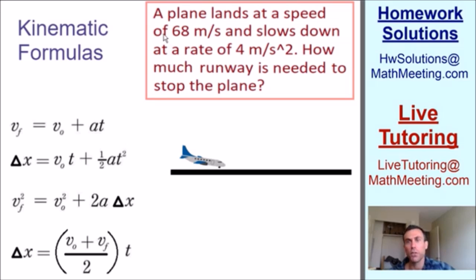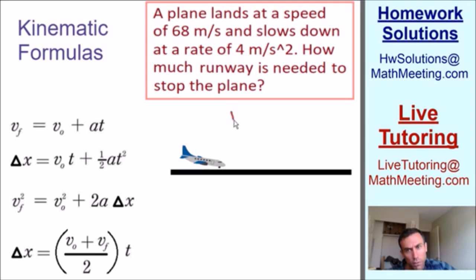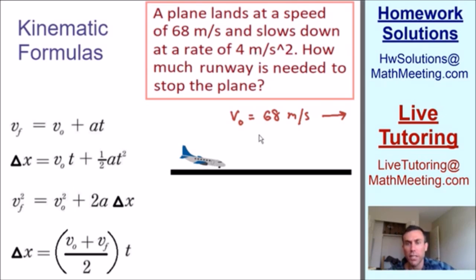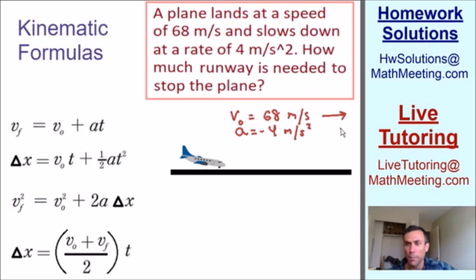So what has been given to us? The plane lands at a speed of 68 meters per second, so the initial velocity is equal to 68 meters per second — the plane is going in this direction. It also says the plane slows down at a rate of 4 meters per second squared. Because it's slowing down, going the opposite direction of the velocity, the acceleration is a negative value: negative 4 meters per second squared.